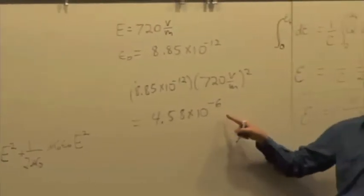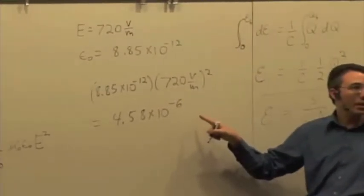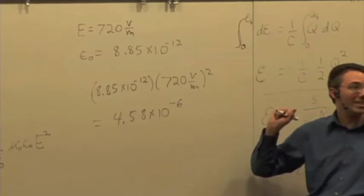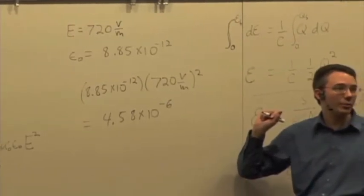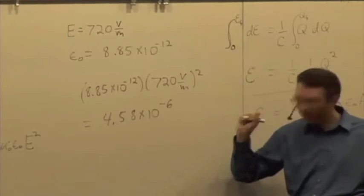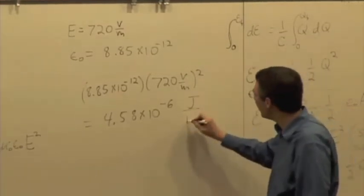4.58 times 10 to the minus 6. And what is this? What are the units? Is this energy? This is energy density. So this is joules per meter cubed, yeah, joules per cubic meter.